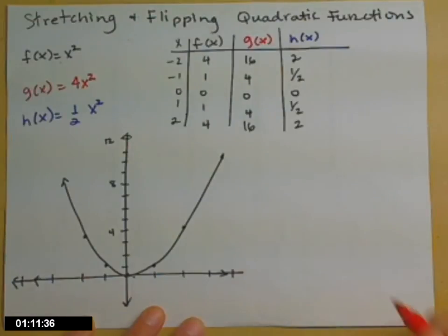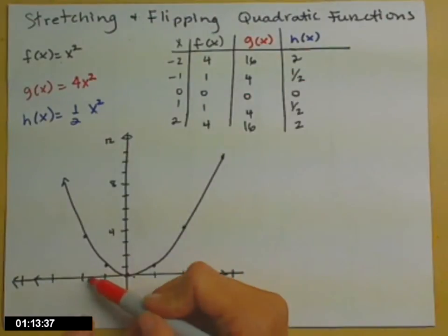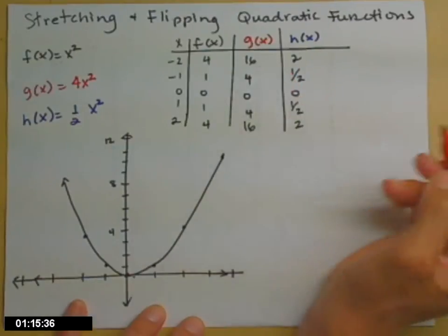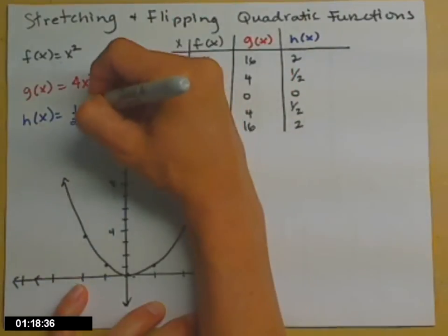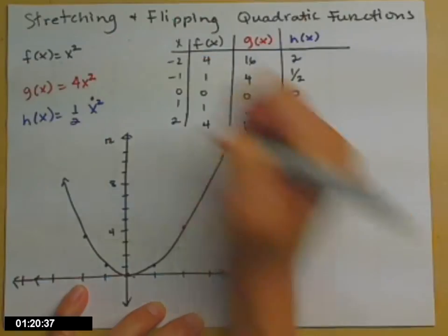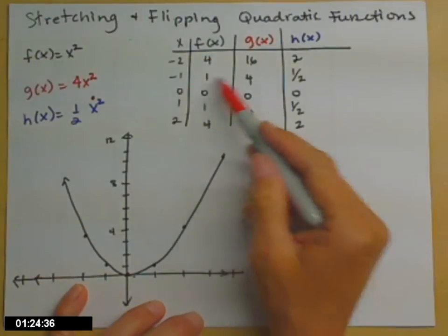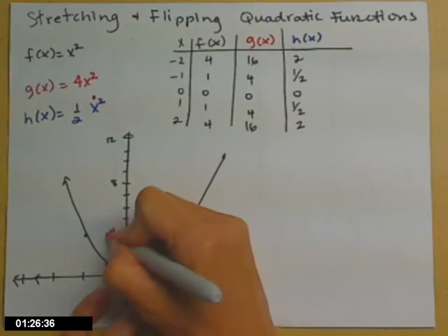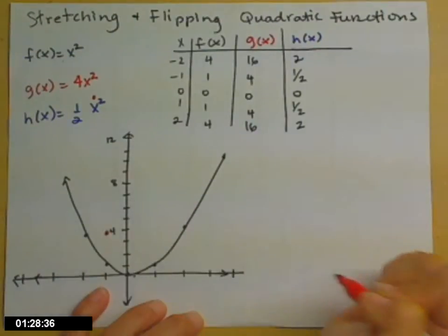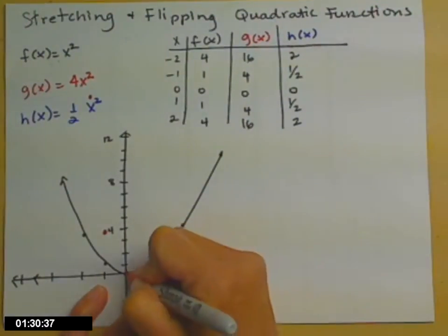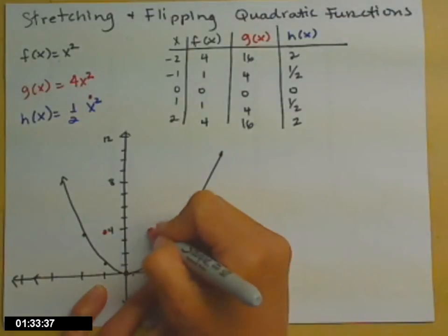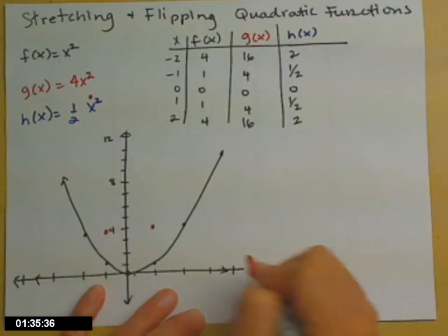Now let's do the g(x) in red. This time when x is -2, my y value is 16. Well my graph only goes up to 12, so we'll estimate that it's up somewhere around there. When x is -1, y is 4, so at that point I'm here. (0,0) is still a point on that same graph. When x is 1, y is 4. Yes, there is symmetry there. Good for you for noticing that.